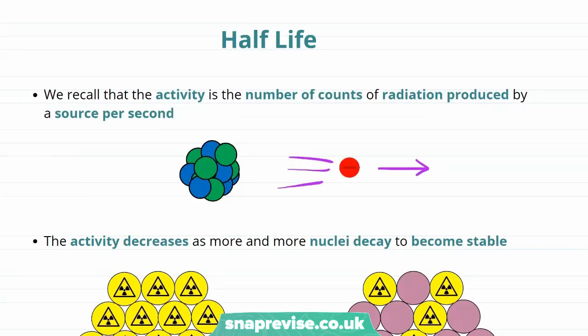Now to introduce the concept of a half-life, we're going to need to remember some things about the concept of activity. So let's recall, the activity is the number of counts of radiation produced by a source per second. Now remember this is what one count of radiation looks like. A nucleus emits a bit of radiation to try and become more stable. So if I have loads of radioactive atoms in a sample, we're going to get loads more of these nuclear decays per second. So if we have a larger number of radioactive atoms, we have a larger activity.